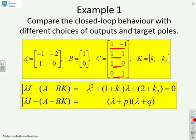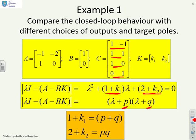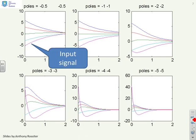Here's your pole placement design. The closed-loop pole parameters are given by 1 plus k1 and 2 plus k2. So if I choose arbitrary pole positions, minus p and minus q, I can achieve whatever p and q I want by corresponding choices of k1 and k2.